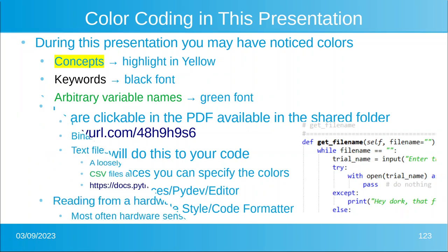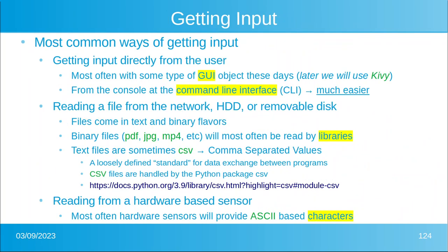Let's talk about the most common ways of getting input. We can get input directly from the user — from a person. Most often these days this is done with some type of graphics, some kind of GUI. Later we're going to use KIVI for that. You can get input from the console, the command line interface. It's much easier to program, but it's much more clumsy for the human.